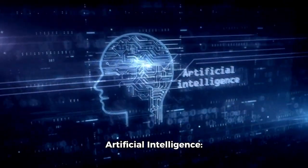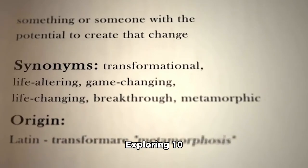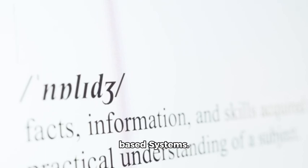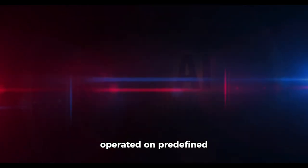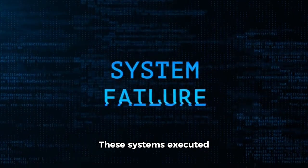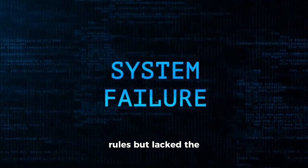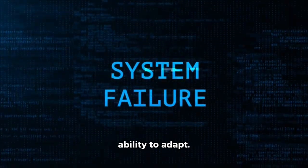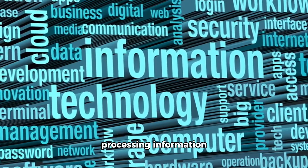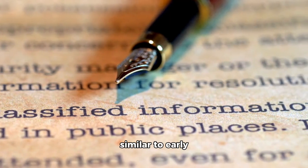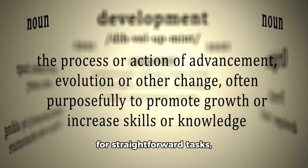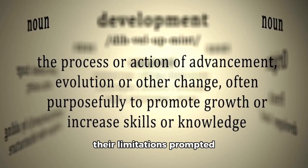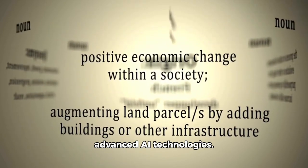The Evolution of Artificial Intelligence: Exploring 10 Transformative Stages. Rule or Knowledge-Based Systems — the earliest stage of AI development involved rule-based systems that operated on predefined instructions. These systems executed tasks based on explicit rules but lacked the ability to adapt. They were foundational, processing information within rigid guidelines similar to early business software and smart home devices. Despite their effectiveness for straightforward tasks, their limitations prompted the development of more advanced AI technologies.